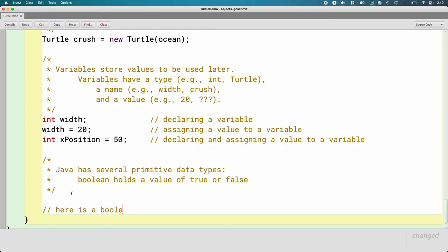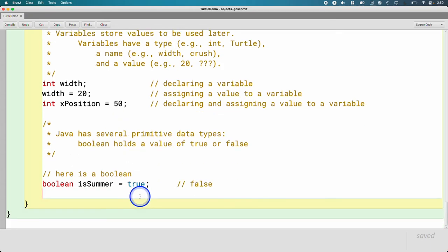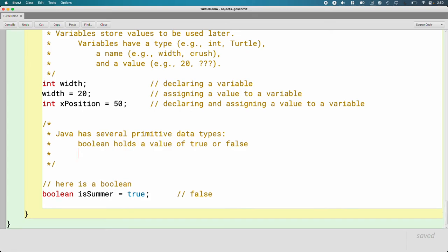A Boolean holds a value of true or false. And we'll add an example of that down below. Here is a Boolean. So the type is Boolean. The variable name is isSummer and it's still summer. But we could also assign it false, you know, when it becomes false. So Boolean is one type, true or false.